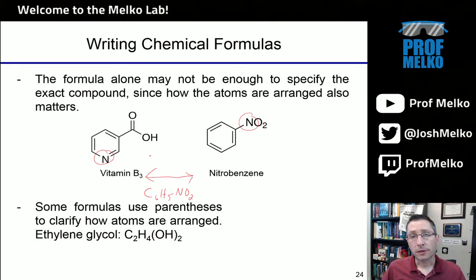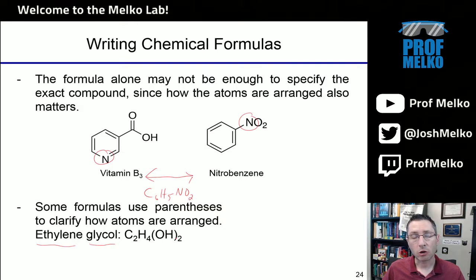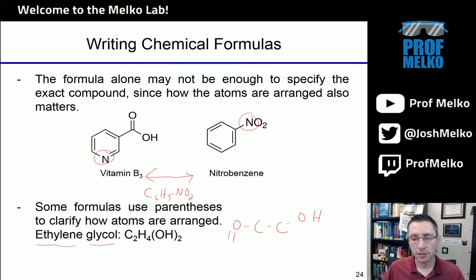Sometimes instead of drawing the structure, you'll try to denote this in the chemical formula itself. So ethylene glycol tells you that these O's and H's are grouped together. If I have an O, the H is going to be attached — that's what this parentheses is telling us, that the hydrogen and the oxygens live together, and there are two of those groups.